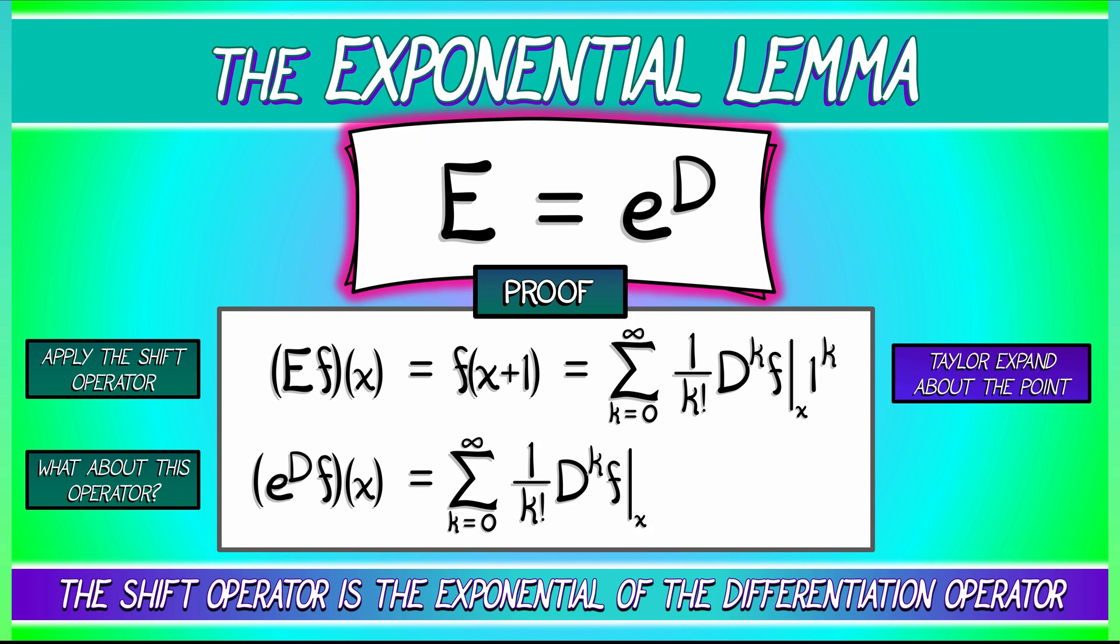How does this compare to what we just saw with the shift operator? Well, the shift operator has that one to the k afterwards, but of course that goes away because it's one, right? That means that exponentiating the differentiation operator, applying it to f, evaluating it at x, gives us via Taylor expansion f of x plus one. It's the same result as the shift operator.